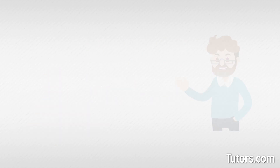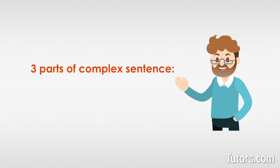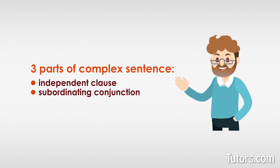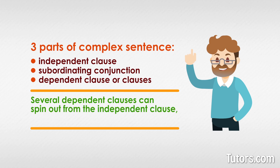Complex sentences are necessarily wordy, since they require at least three parts: independent clause, subordinating conjunction, and a dependent clause or clauses. Keep in mind, several dependent clauses can spin out from the independent clause, leading to very long sentences.